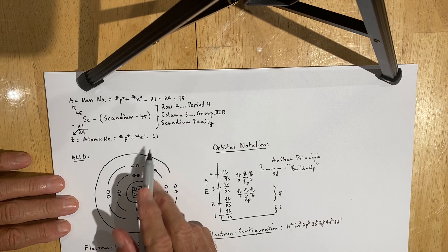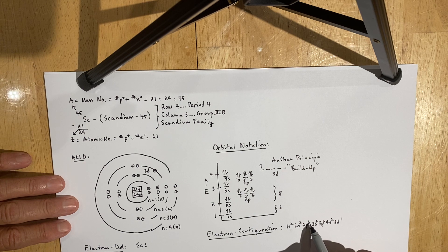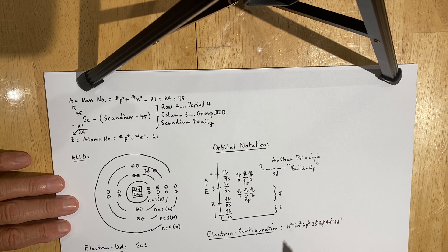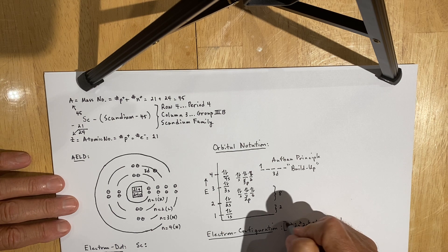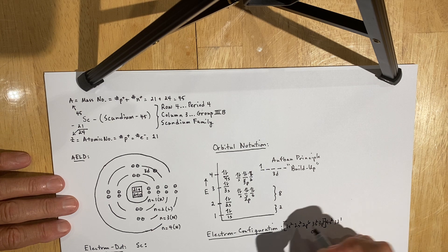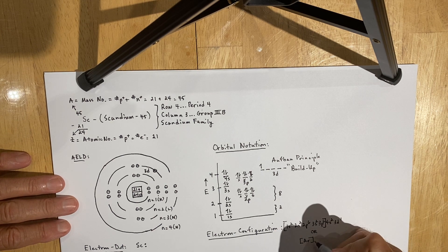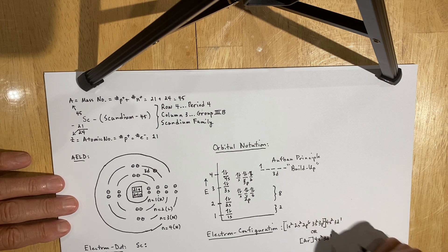The superscripts should sum to 21: 2+2=4, +6=10, wait — 1+2=3, +6=9, +2=11, +6=17, +2=19, +2=21. We can also simplify this by recognizing that 1S², 2S², 2P⁶, 3S², 3P⁶ is the configuration for argon, with an additional two electrons in the 4S and one electron in the 3D. So the outer configuration, using the argon core notation, would be [Ar] 4S² 3D¹.